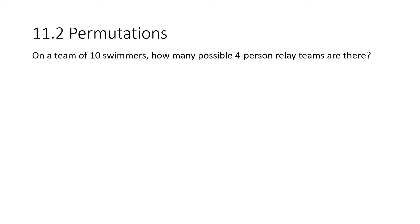Hi there, Ms. Barber here. On a team of 10 swimmers, how many possible four-person relay teams are there? In this situation, all swimmers must be selected from this one team. No swimmer can be selected more than once, and the order or arrangement in which swimmers are selected affects the composition of the relay team. The process of selecting such groups is called a permutation, the title of this lesson.